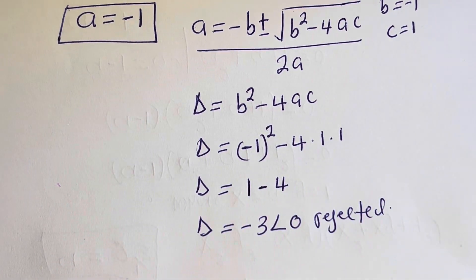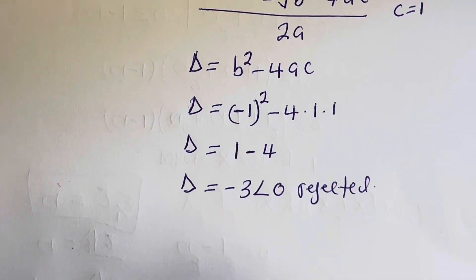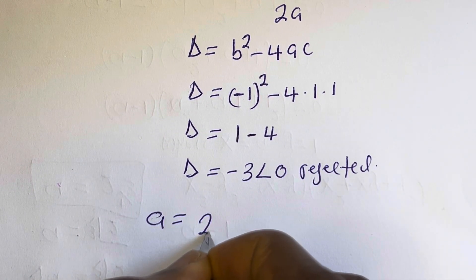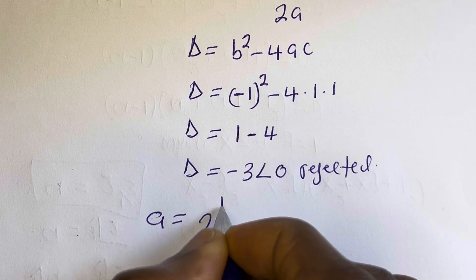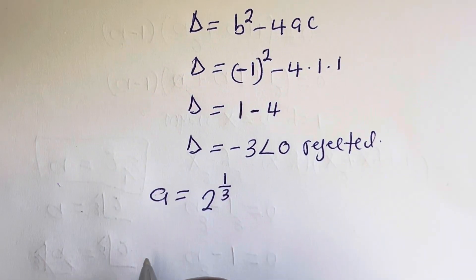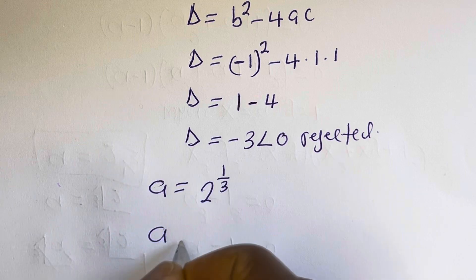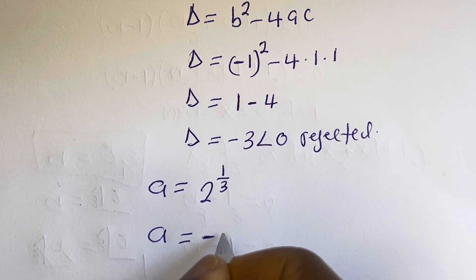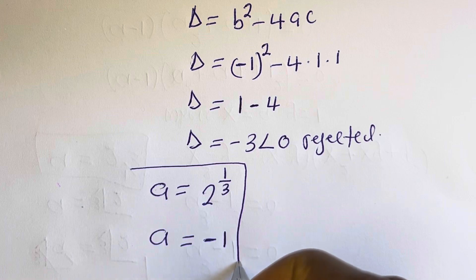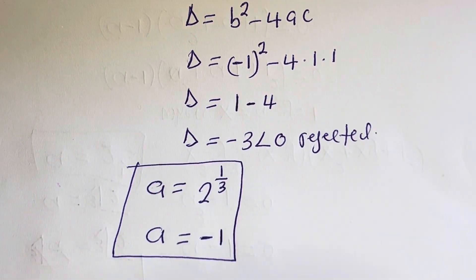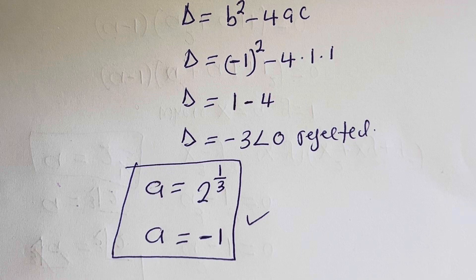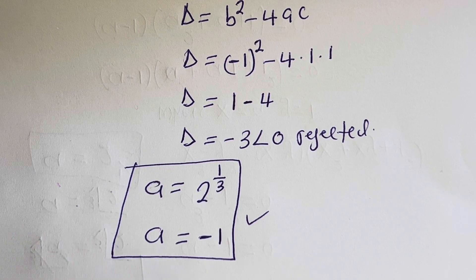Therefore, the only real solutions are a equals 2 to the power of 1 over 3, and a equals minus 1. This is the final answer. I hope you enjoyed the video. Thank you for watching. Please don't forget to like, share, comment, and subscribe to my channel.